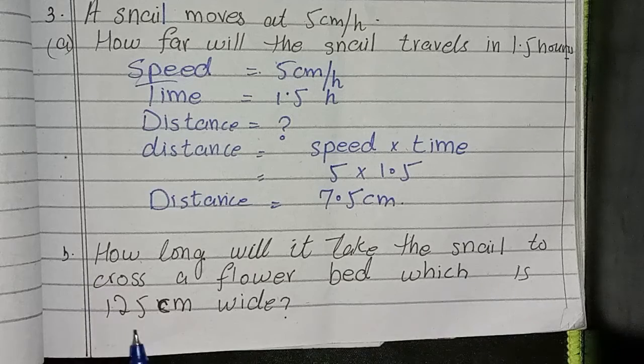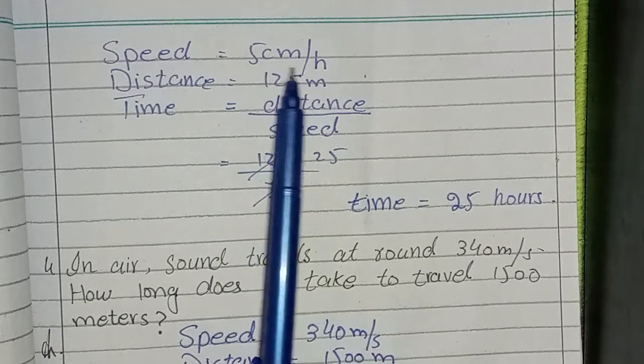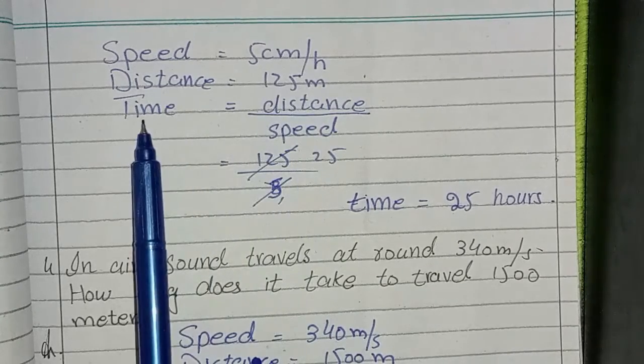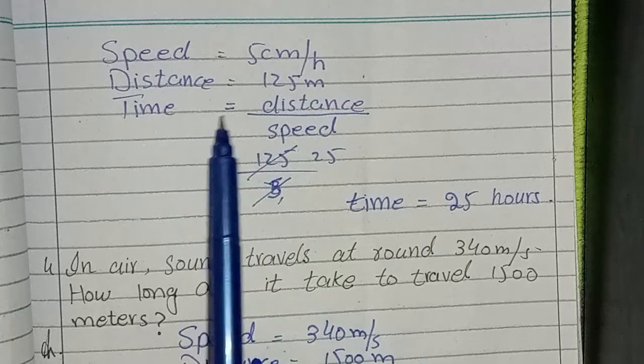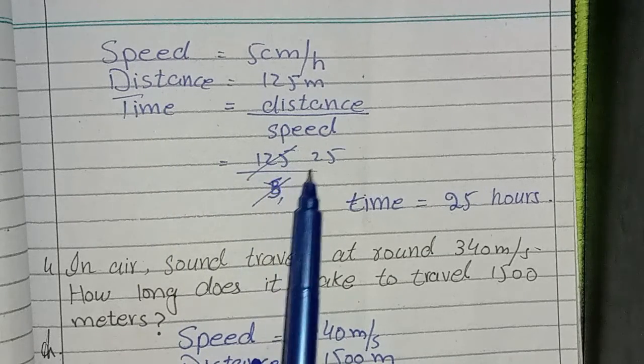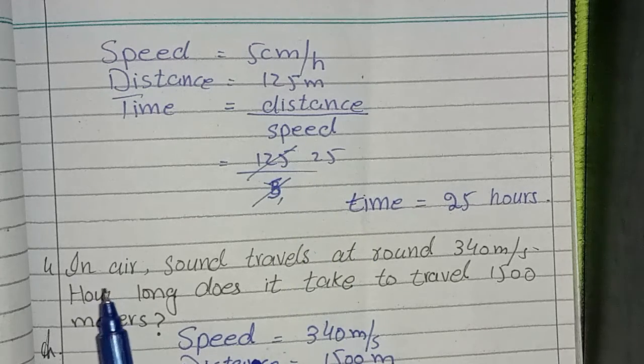Next question: speed is given here, speed is 5 cm per hour. Distance is also given here, 125 meter. Time is not known. Equation is given here: time is equal to distance over speed. Then put it here. After cutting, then you will have to divide it. Second test yourself last question is: